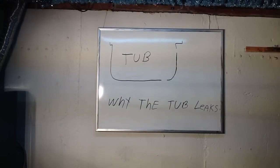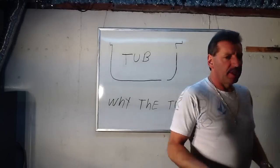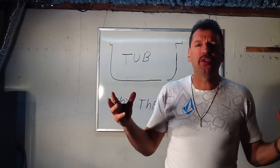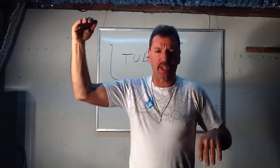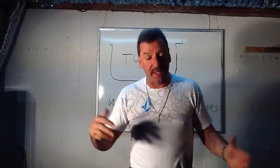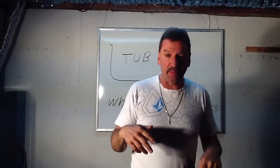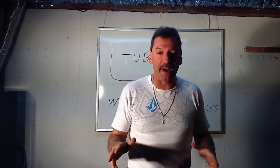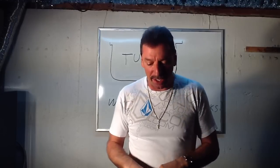Lou Depot back here with a quick tip on why the tub leaks. When I say why the tub leaks, I'm specifically talking about water dripping downstairs if it's an upstairs tub — through the ceiling into the downstairs, whether it be a downstairs bathroom or even a basement. But every time someone takes a shower, no matter how much they try to stop it, water drips downstairs.